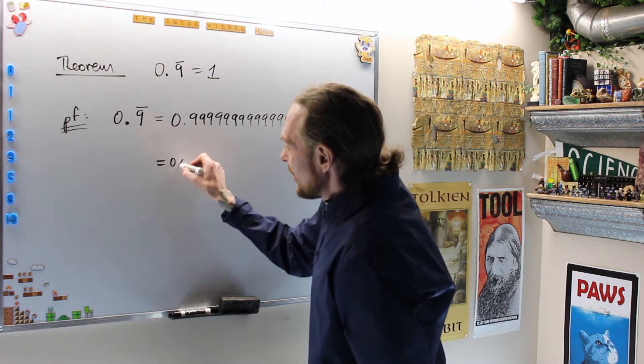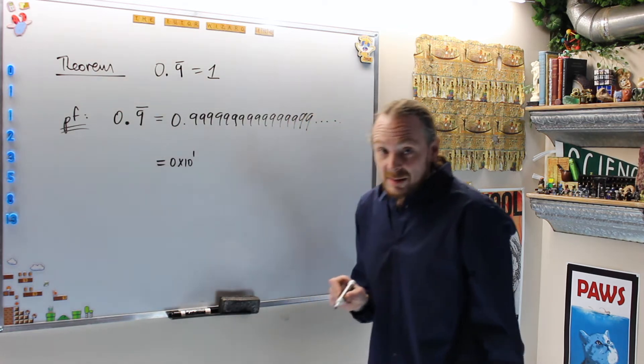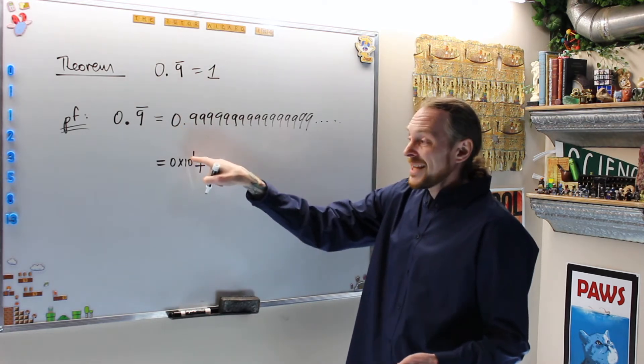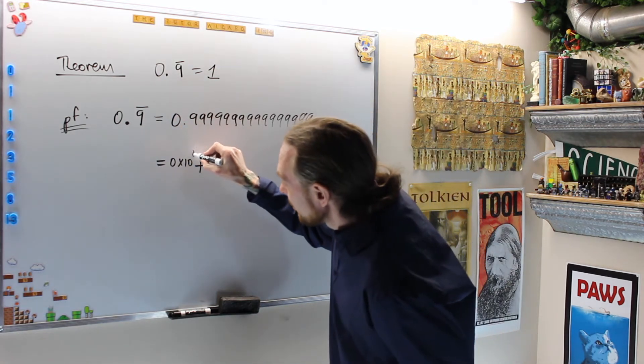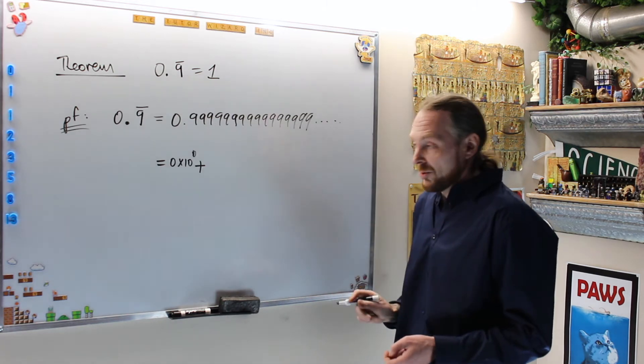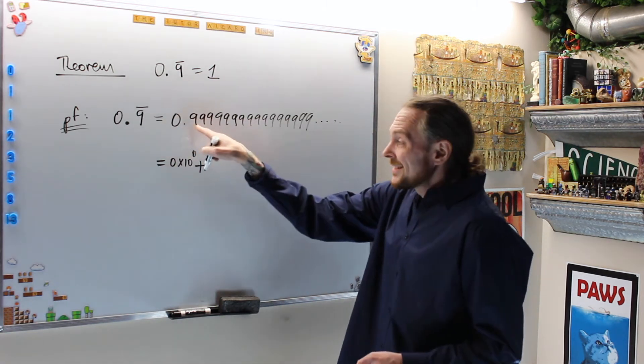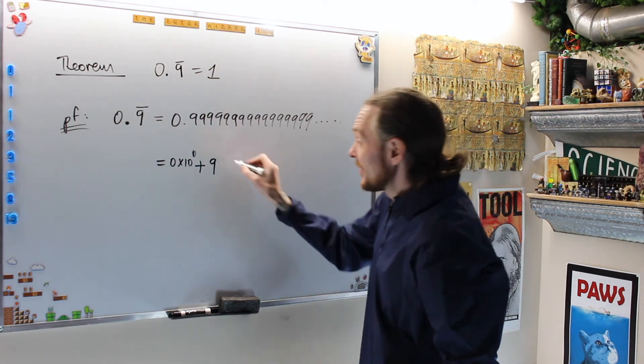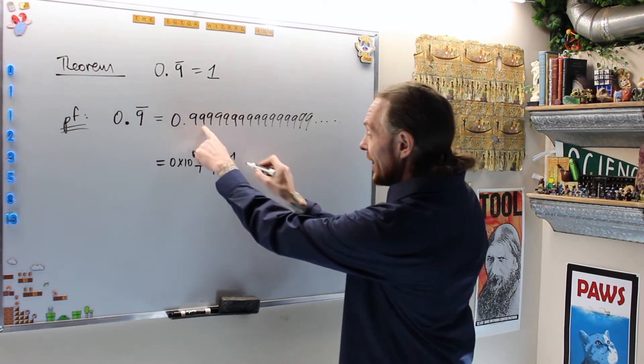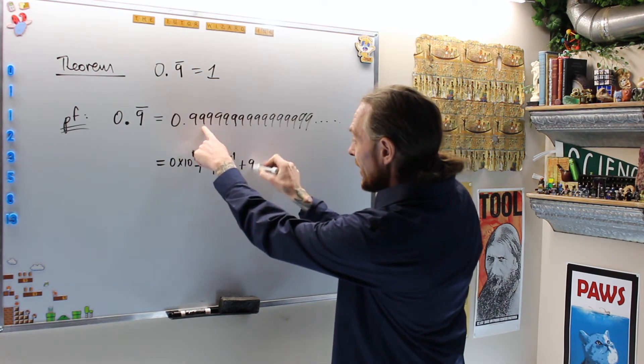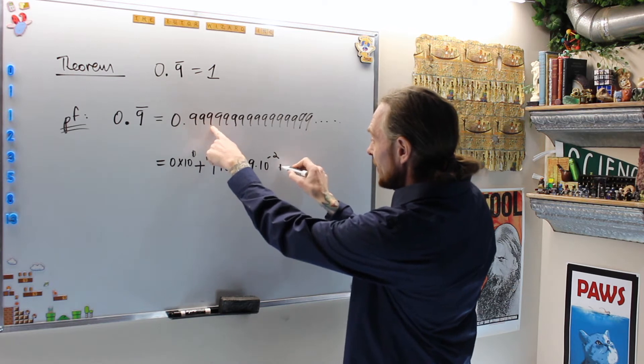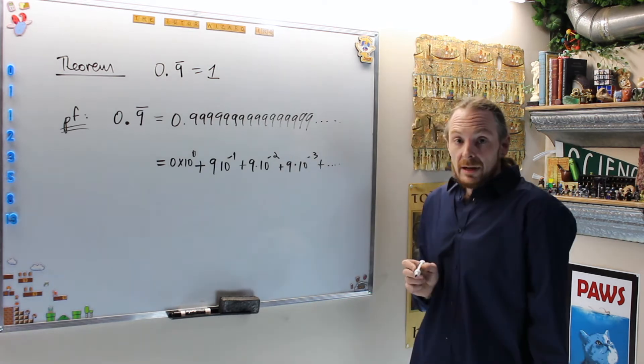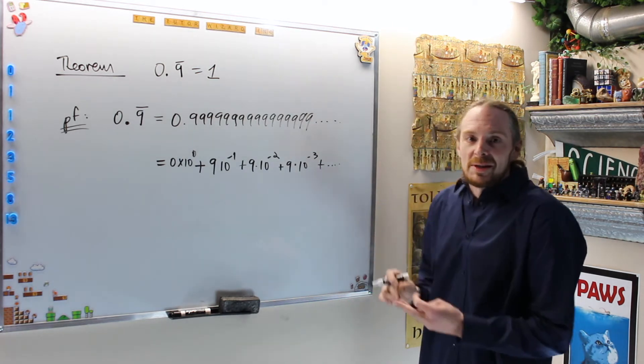I'm going to take this representation and show you what this decimal point actually means. I'll do the first three so you can see. This is equal to 0 times 10^0, the ones spot, and there are none of those. Then the decimal point tells us that the exponents of 10 become negative. This first 9 is 9 times 10^(-1). The second 9 is plus 9 times 10^(-2). The third 9 is plus 9 times 10^(-3), plus dot dot dot, all the way.